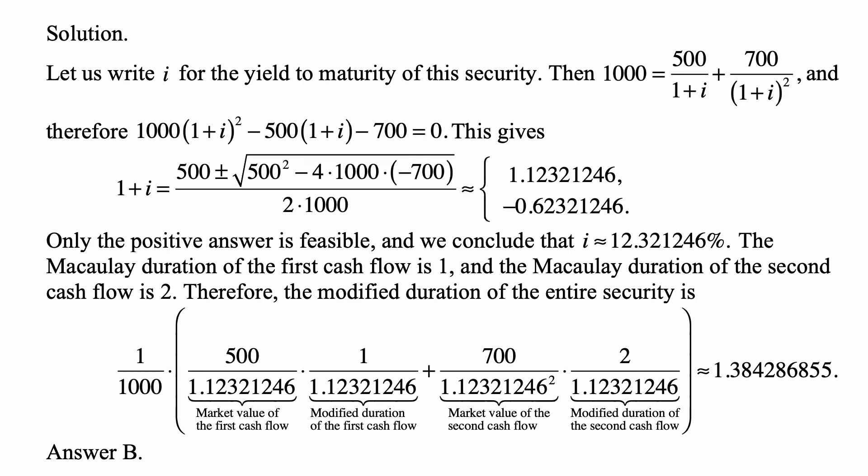This is going to be equal to 1 over 1,000, which is the price, times the market value of the first cash flow, which is 500 divided by 1 plus the interest rate. That's multiplied by the modified duration of the first cash flow, which is 1 over 1 plus the interest rate.